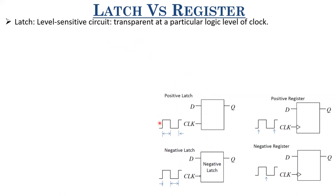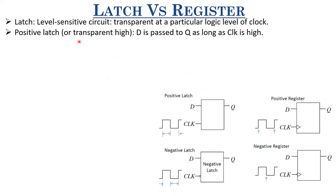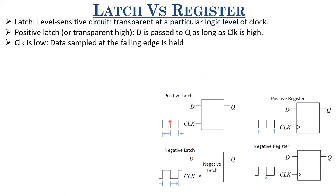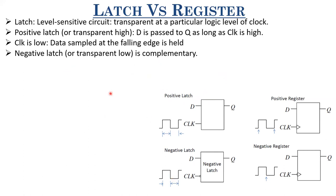For a positive latch, also called transparent-high latch, D is passed to Q as long as the clock is high. When the clock goes low, whatever value of D was there immediately before this edge is retained. Logic level one for positive latch: D is transferred to Q. Logic level zero: the data is held — the data which was sampled immediately before the clock went low. For a negative latch, everything is complemented — it is the dual of the positive latch.